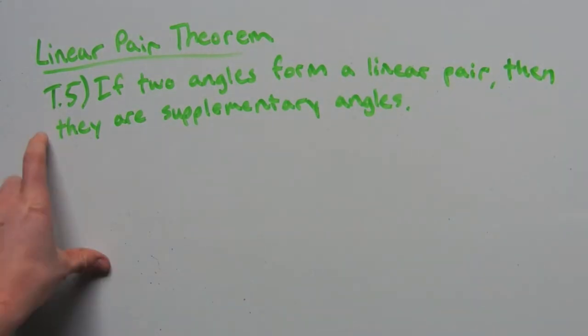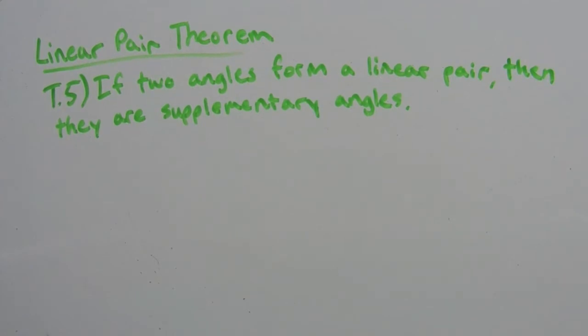So the fifth theorem that we're going over, T5, the linear pair theorem, says that if two angles form a linear pair, then they are supplementary angles.